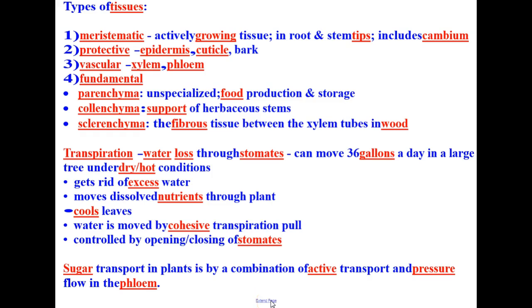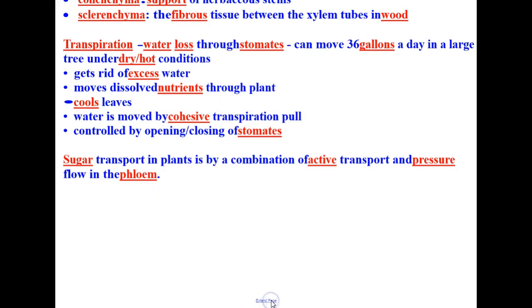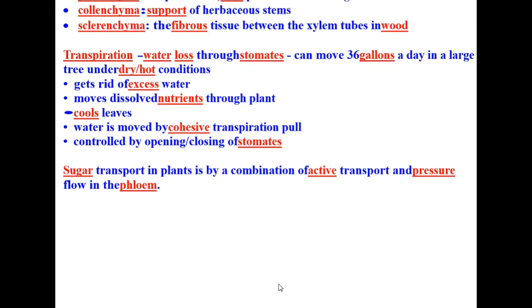What about food for the plant? Well, sugar is transported in plants by a combination of active transport and the negative pressure flow in the phloem. This will be discussed later in a video as well.